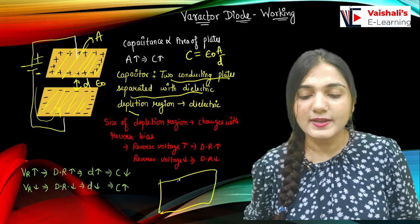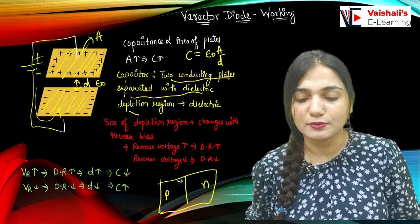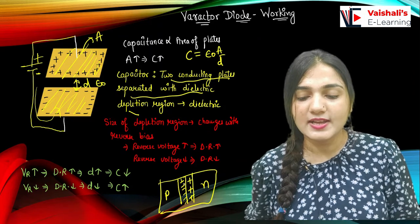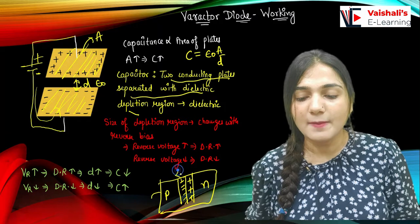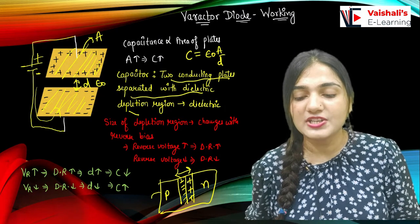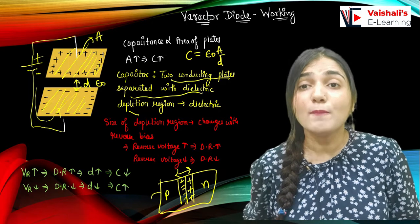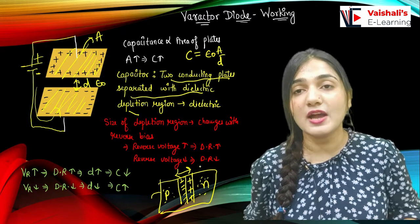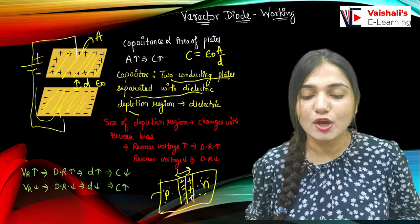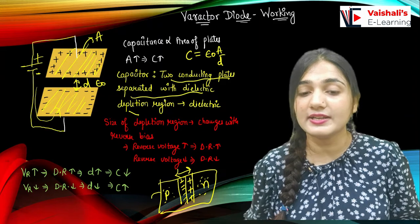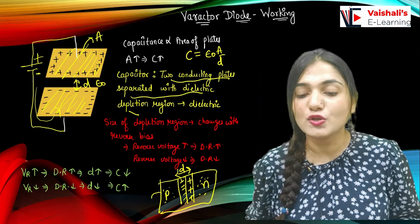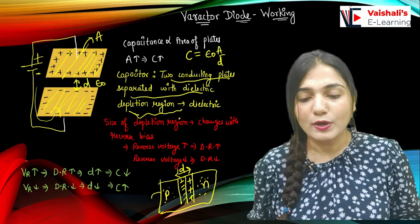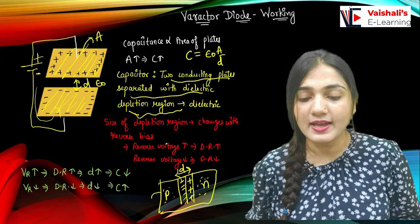Now relating this to the diode: in a diode we have a P region and an N region. In the P region we have negative immobile ions, and in the N region we have positive immobile ions. When we apply reverse voltage, the depletion region increases. The depletion region has no mobile charge carriers. The P region with many holes and the N region with many electrons act as the conducting plates, while the depletion region acts as the dielectric medium. The width of the depletion region depends on the reverse bias voltage.